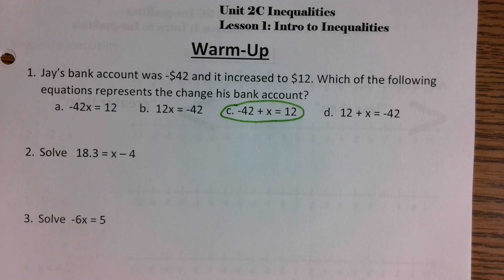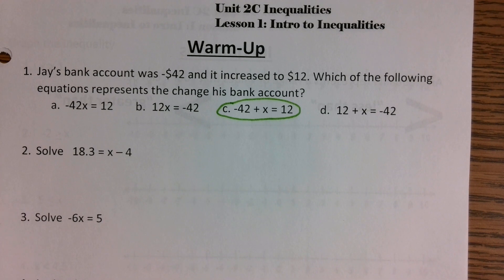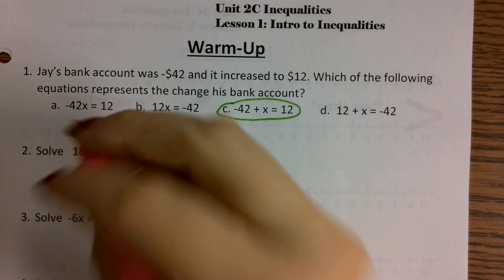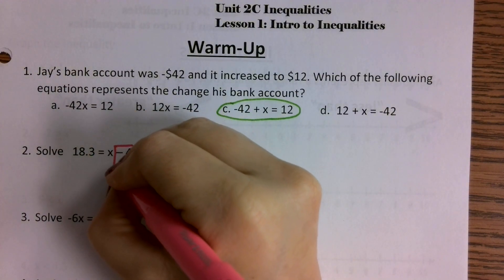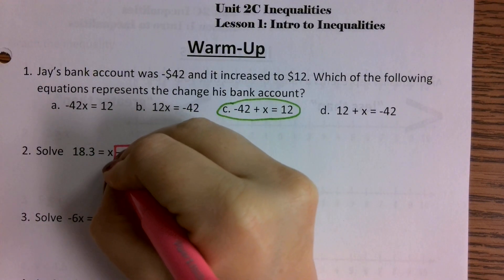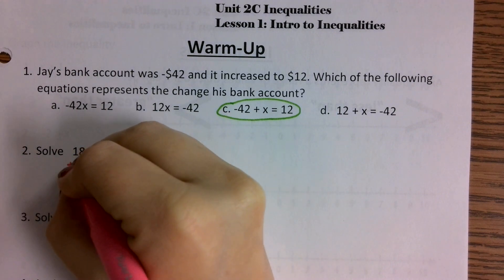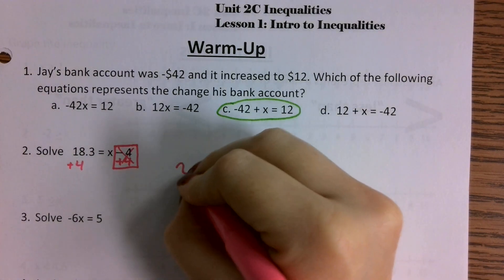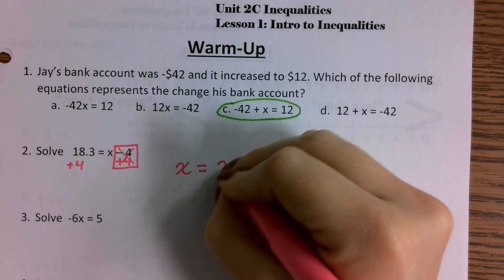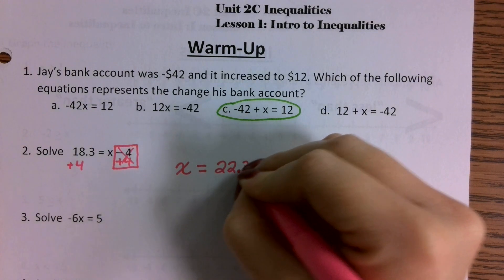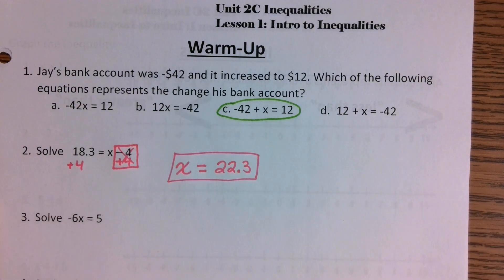Problem number two: 18.3 = x − 4. To solve this, we identify the constant, which is minus four. We add four to both sides — those fours cancel out — and we get x is equal to 22.3.